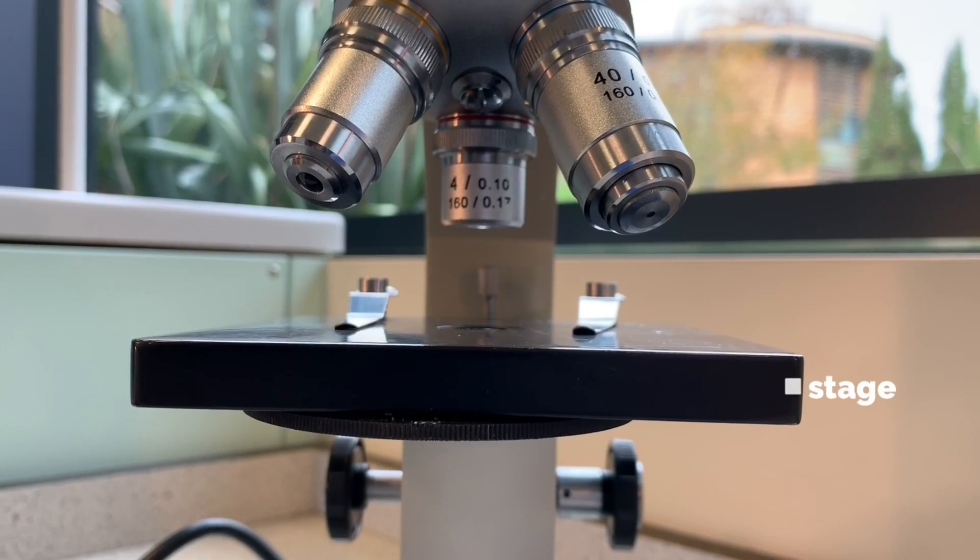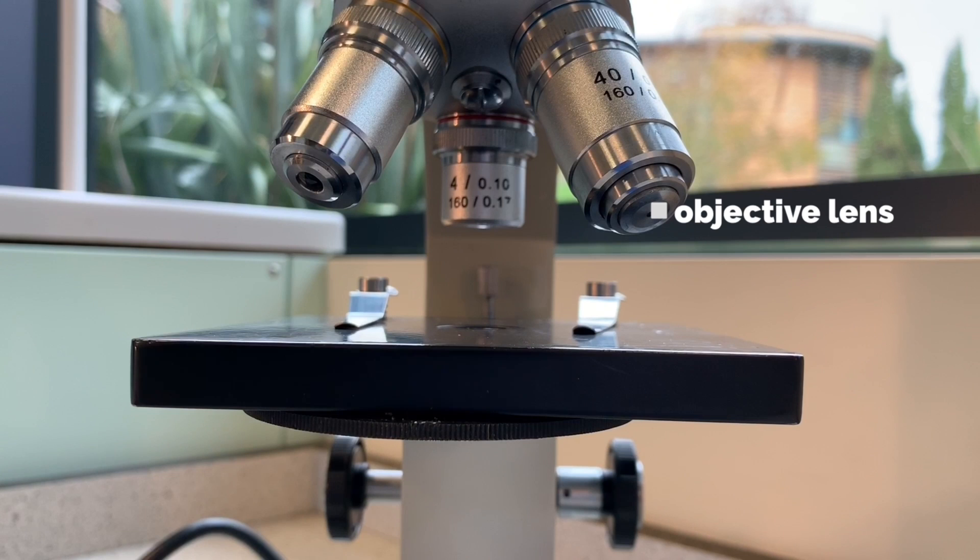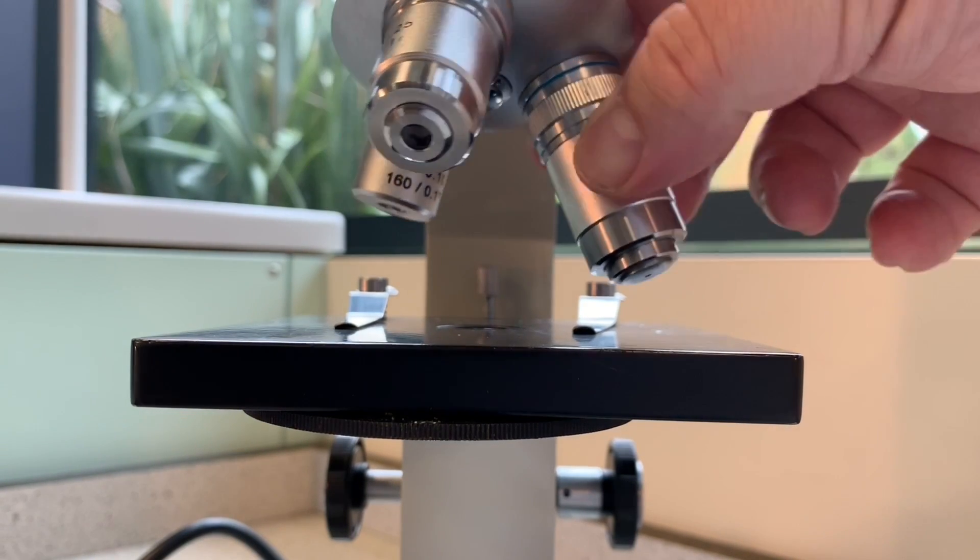The light then passes through this next part which is called the stage. And this is the area where our slide will sit. The light will pass through the stage through our specimen and this is where our objective lens then focuses on the image.